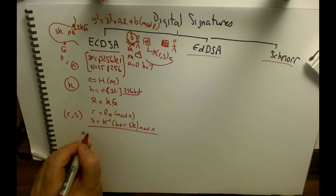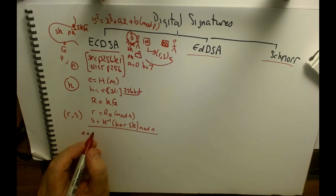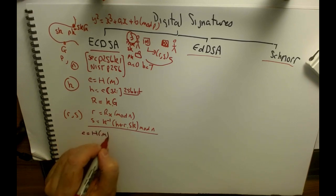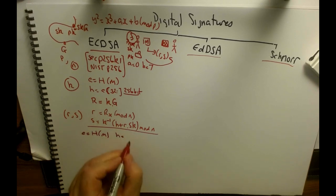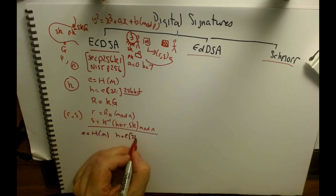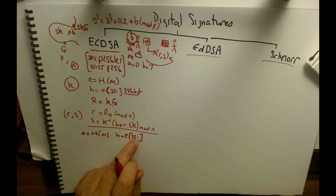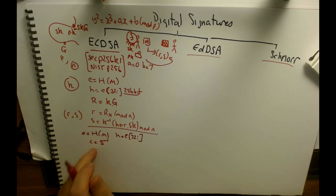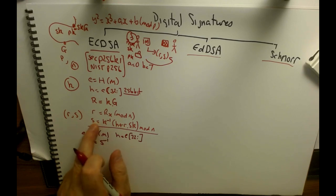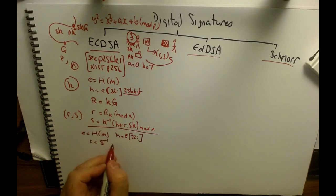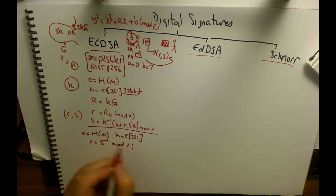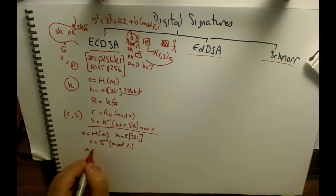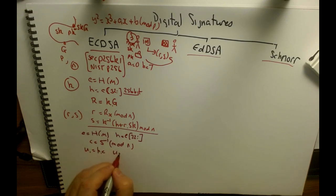Bob does essentially the same thing: he takes the hash of the received message, takes the lower 32 bytes (256 bits), and then computes a value c which is the inverse of s mod n.